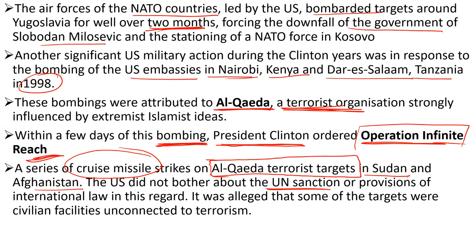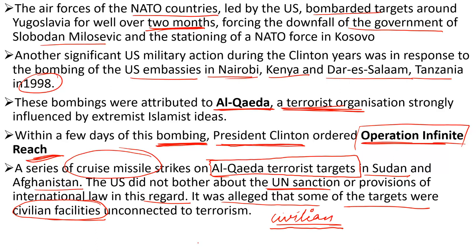The UN sanctions require permission before attacking a country. The US disregarded international law provisions and attacked Al-Qaeda targets in Sudan and Afghanistan. Some of the targets turned out to be civilian facilities, meaning innocent people were harmed. This was very against humanity, but the main point is that the US was showing its power here.